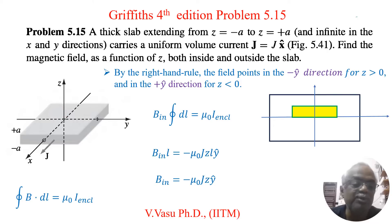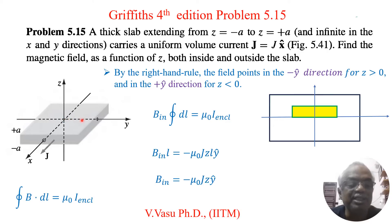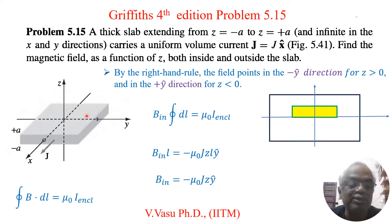First we consider the magnetic field at the center, along the Y axis at the origin. Above the Y axis the current contribution points in one direction, and below it points in the positive Y direction, so these contributions cancel out. Therefore, the magnetic field at the Y axis is equal to zero — that is one important point.